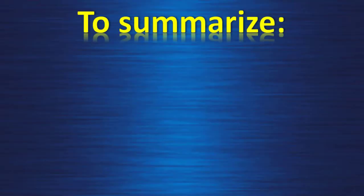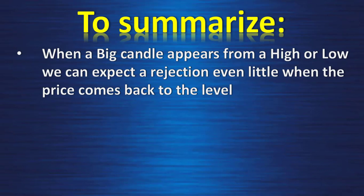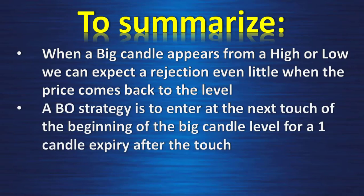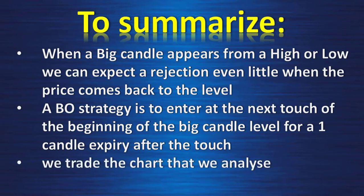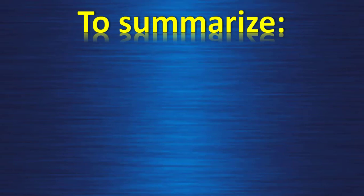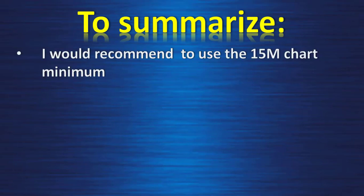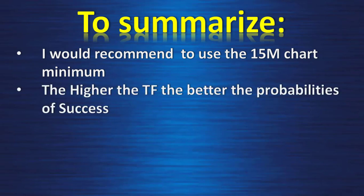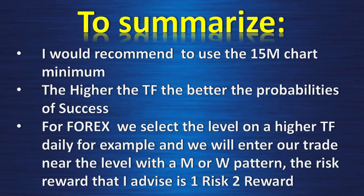To summarize this lesson: when a big candle appears from a high or low, we can expect a rejection even when the price comes back to the level. A binary options strategy is to enter at the next touch of the beginning of this big candle level for a one-candle expiry after the touch. We trade the chart that we analyze. I recommend using at minimum the 15-minute chart for this strategy — the higher the time frame, the better the probability of success. For Forex, we select the level on a higher time frame such as daily, and enter near the level with an M or W pattern using the 15-minute chart. The risk/reward I advise is 1 risk to 2 reward.